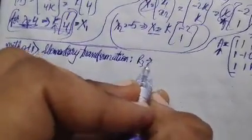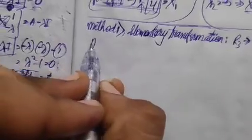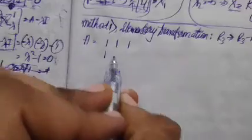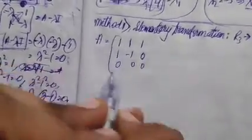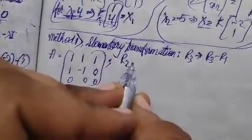Let us apply the elementary transformation method. First, let row 3 equal row 3 minus row 1. After this transformation, that position in row 3 becomes zero. The resulting matrix has entries 1, 1, 1 in the first row; 1, -1, 0 in the second; and 0, 0, 0 in the third.